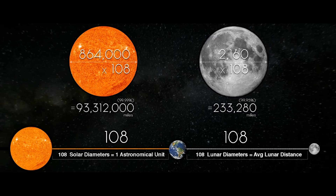As it turns out, if you take the diameter of the sun and multiply it by 108, it gives us the distance between the earth and the sun. And if we take the diameter of the moon, which is 2,160, and multiply it by the same factor of 108, we discover that we get the earth-moon distance. So it's this 108 factor — this 108 spacing, this proportional relationship.